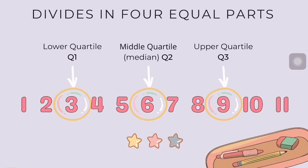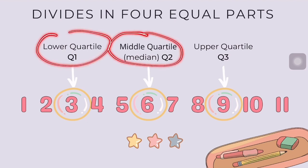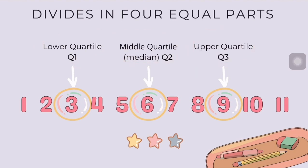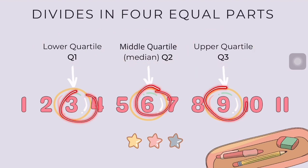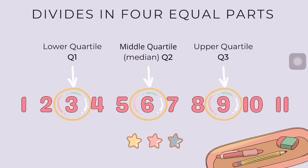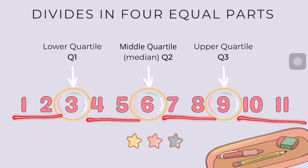So you can visualize it better — as you can see, we have the lower quartile, the middle quartile, and the upper quartile. These are at positions 3, 6, and 9. What I mean by dividing into four equal parts: it is divided into 1, 2, 3, and 4.